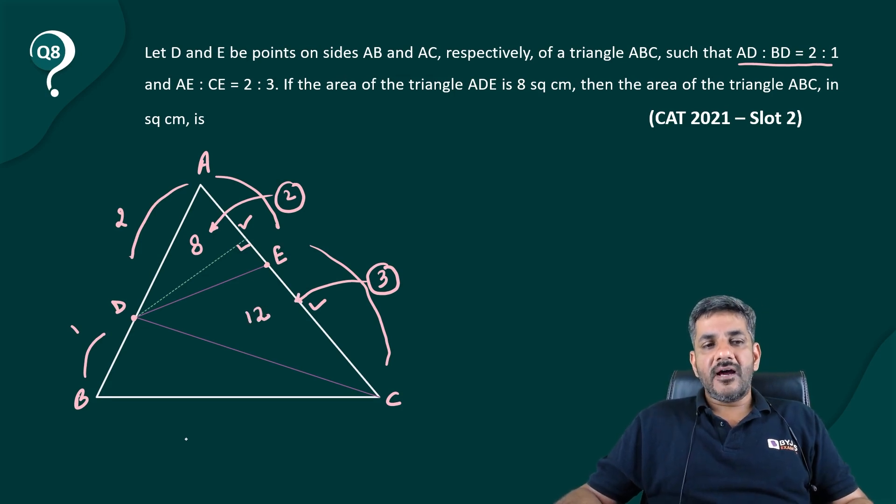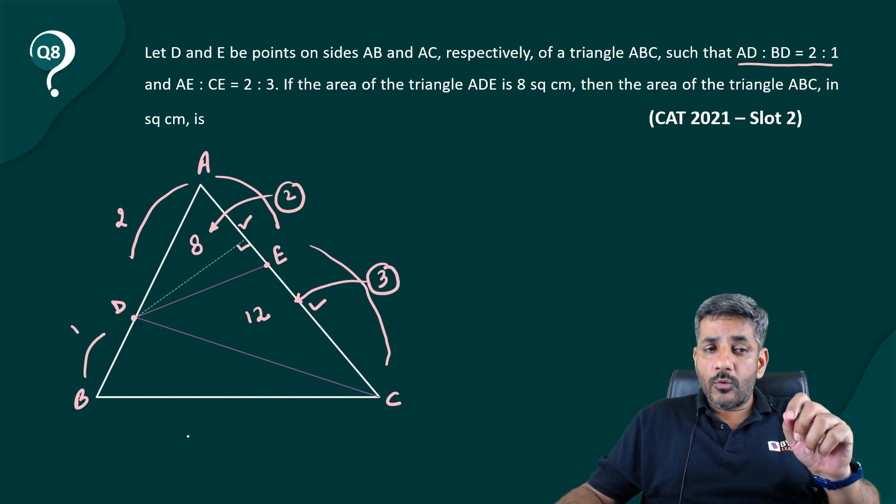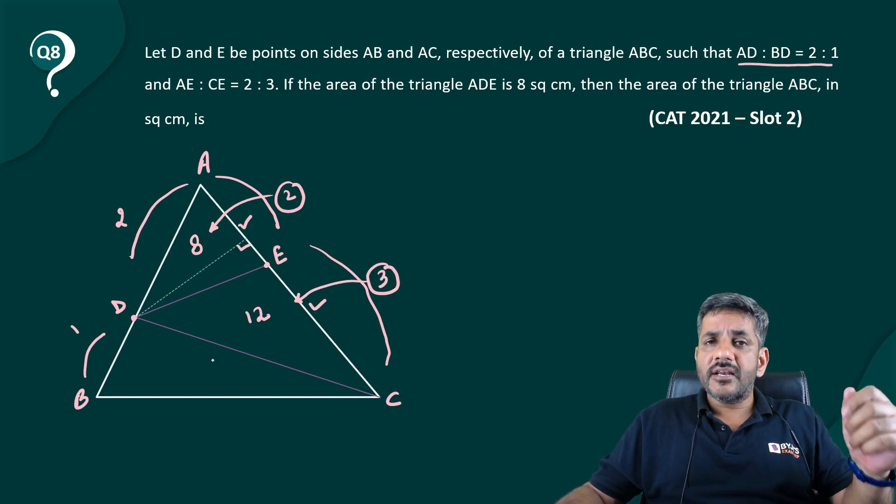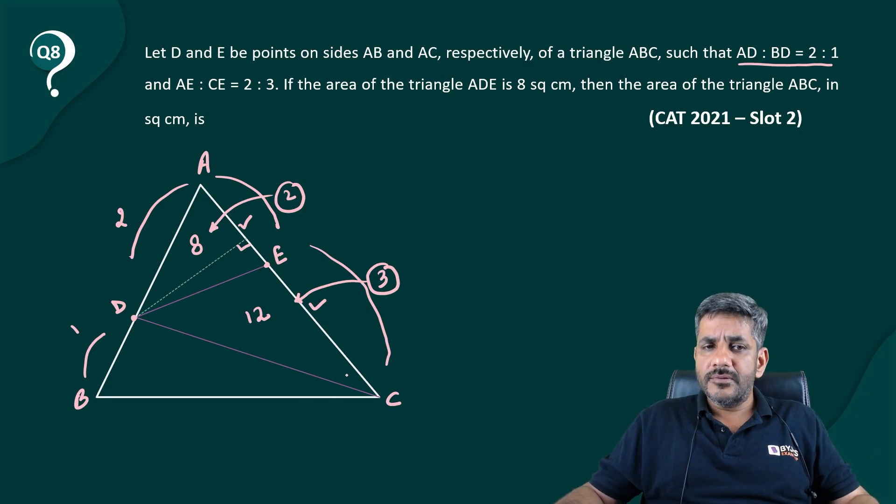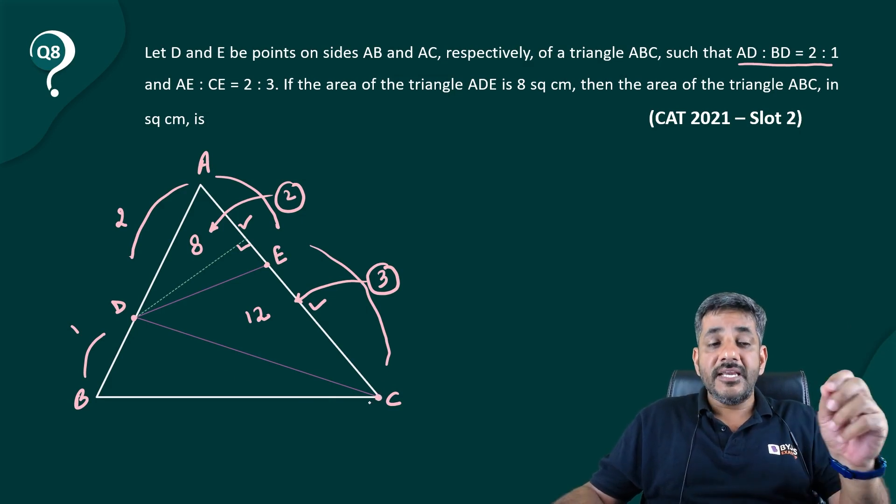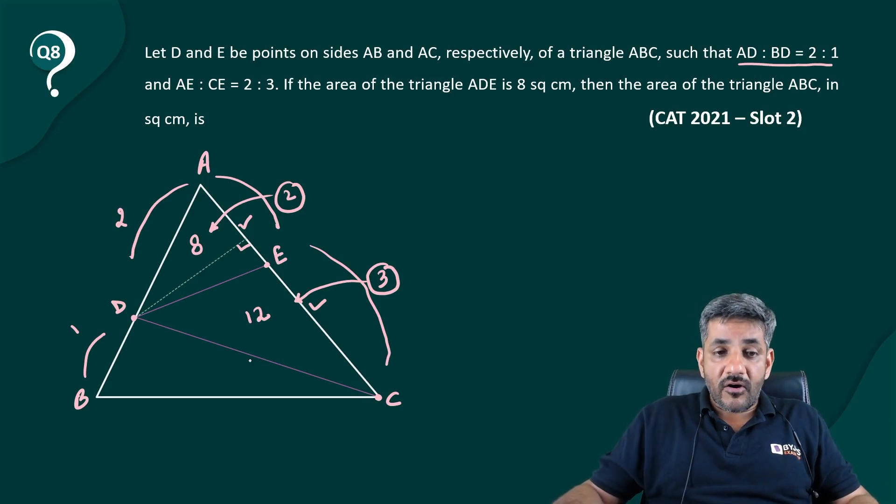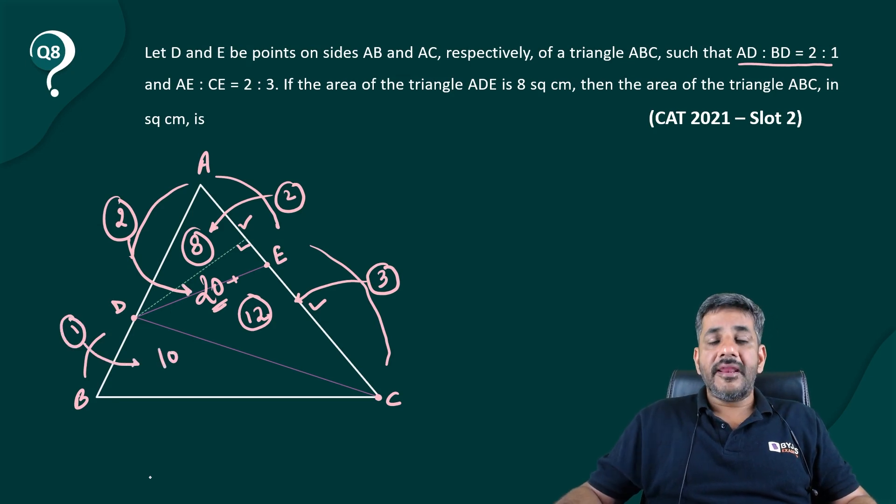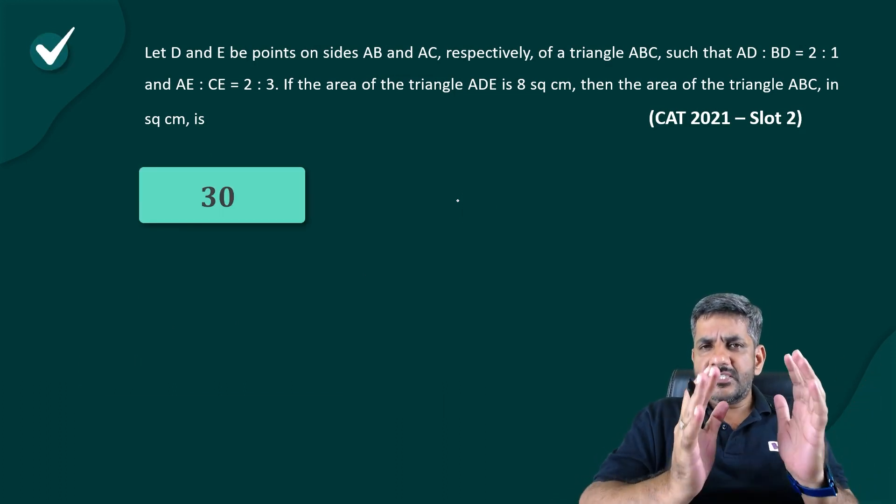So area of ADE is 8, area of DEC is 12. And once again, exactly by the same logic, if you look at this complete triangle ADC and you look at this complete triangle BDC, they also share a common altitude. So if I drop an altitude from point C on AB, that could also be common for them. So what is the area of ADC? It is 12 plus 8, that is equal to 20. So if the base is 2, the area is 20. So if the base is 1, area should be 10. And hence I can say the total area of ABC is 20 plus 10, which is equal to 30.